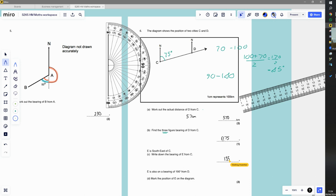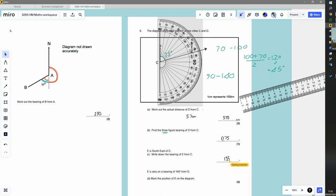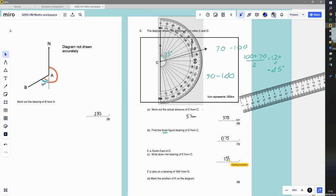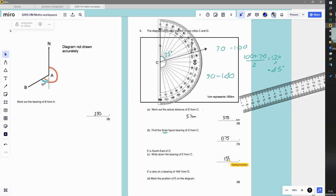It then says that E is southeast of C, so we need to draw E. Well, we don't have to draw it for this question, but it just asks you to work out what the bearing would be there. Well, it's going to be halfway between east and south. East is 90 degrees, south is 180 degrees, so the halfway point is 135. So it's going to be in this direction going through 135.